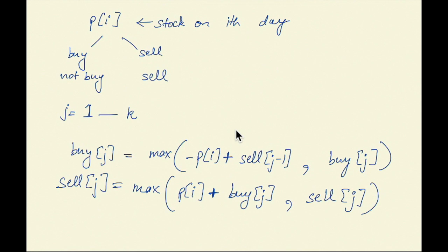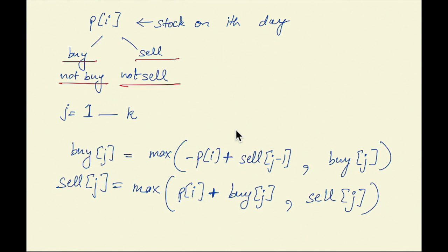For any given ith day, the price of the stock is p[i], and we have two options: either we can buy or not buy on that day, and we can sell or not sell on that day. We have to take this decision for all of the K transactions, where J goes from 1 to K.